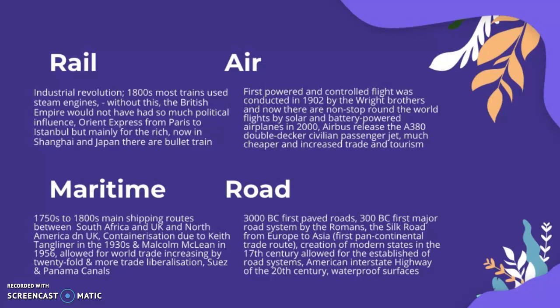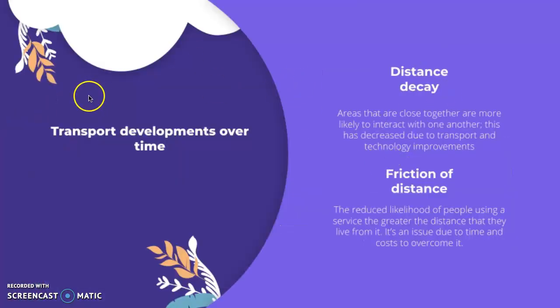For roads: in 3000 BC there were the first paved roads; in 300 BC the first major road system was established by the Romans, and the Silk Road ran from Europe to Asia — the first pan-continental trade route. Creation of modern states in the 17th century allowed for more established road systems, and in the 20th century the American Interstate Highway was constructed — essentially crossing the entire country — along with waterproof road surfaces, further reducing distance decay and friction of distance.